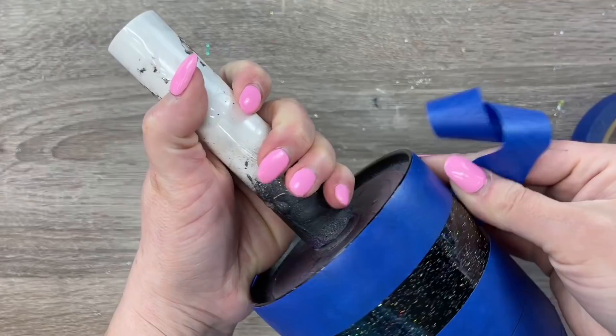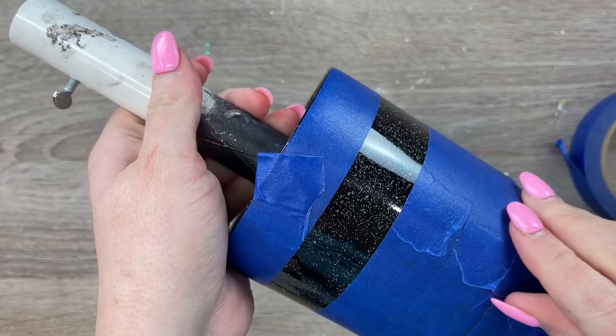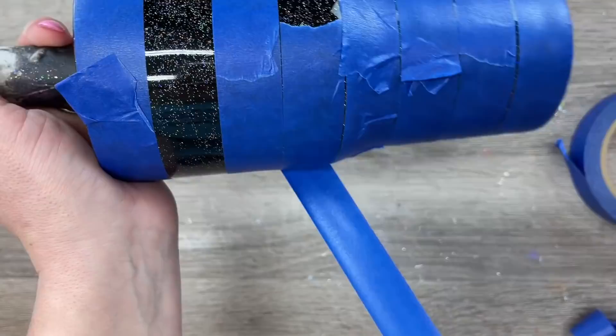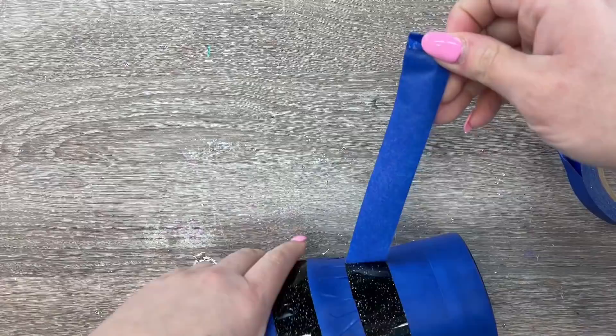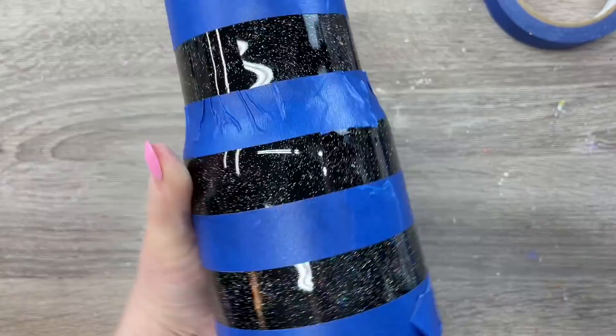For this white stripe, I am going to start with the second line down. I don't want my white stripe to be at the very top because I will inevitably have to sand up there and I don't want to risk sanding through my white glitter and exposing the black underneath.